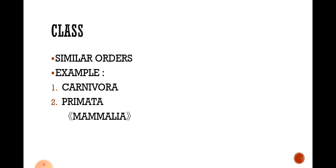The next category is Class. Similar orders come under a class. For example, Carnivora and Primata both come under a class named Mammalia.